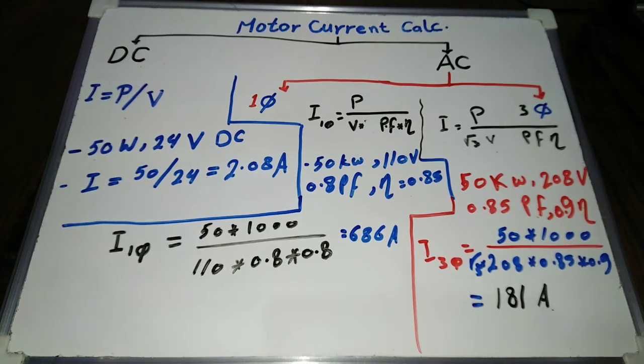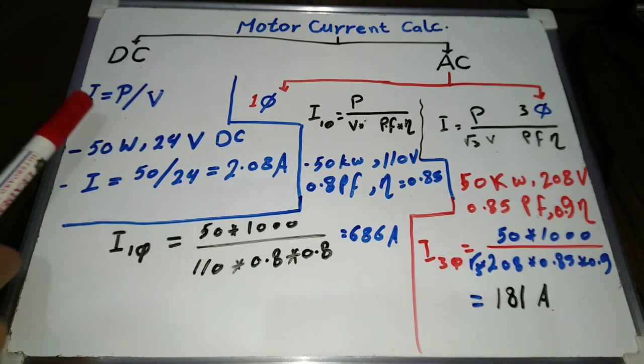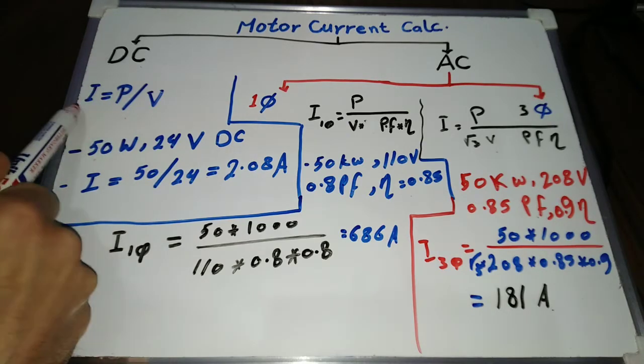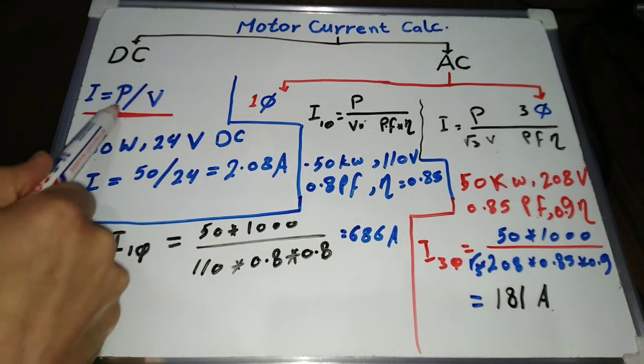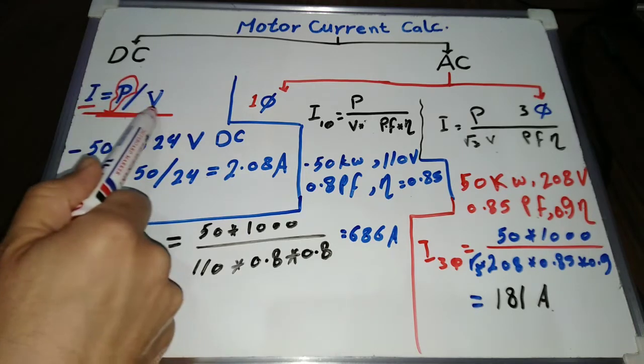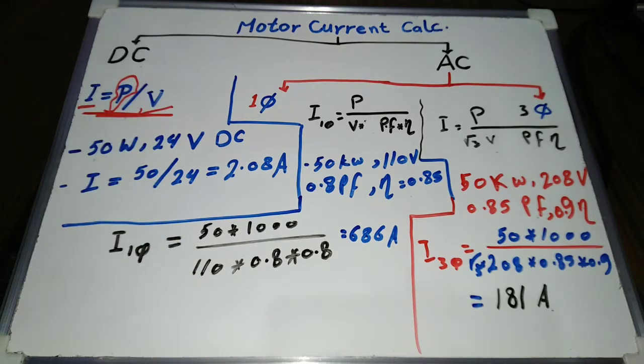How to calculate DC and AC motor current? To calculate DC motor current, we simply apply the equation I equals P divided by V, where I is DC motor current, P is the DC motor power, and V is the operating voltage of the motor.